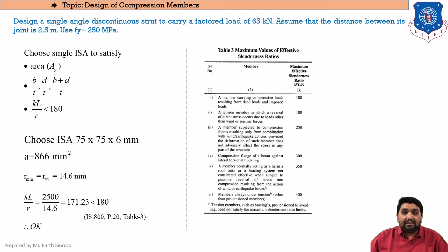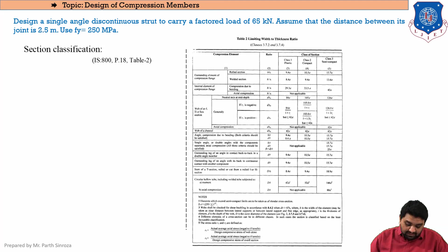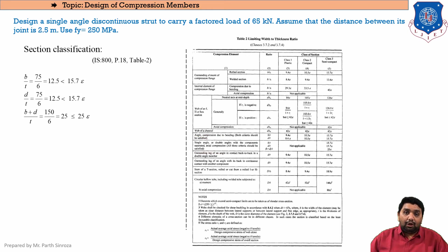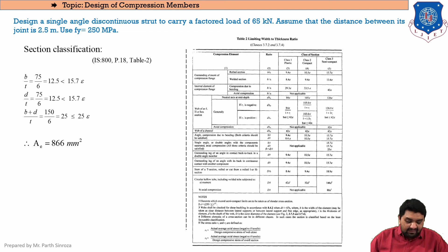Second check: section classification. From the relevant IS code clause for single or double angles, we check three cases: b/t, d/t, and (b+d)/t. For ISA 75×75×6, the values come out to be 12.5, 12.5, and 25 respectively. All three conditions are satisfied, confirming ae = ag = 866 mm².